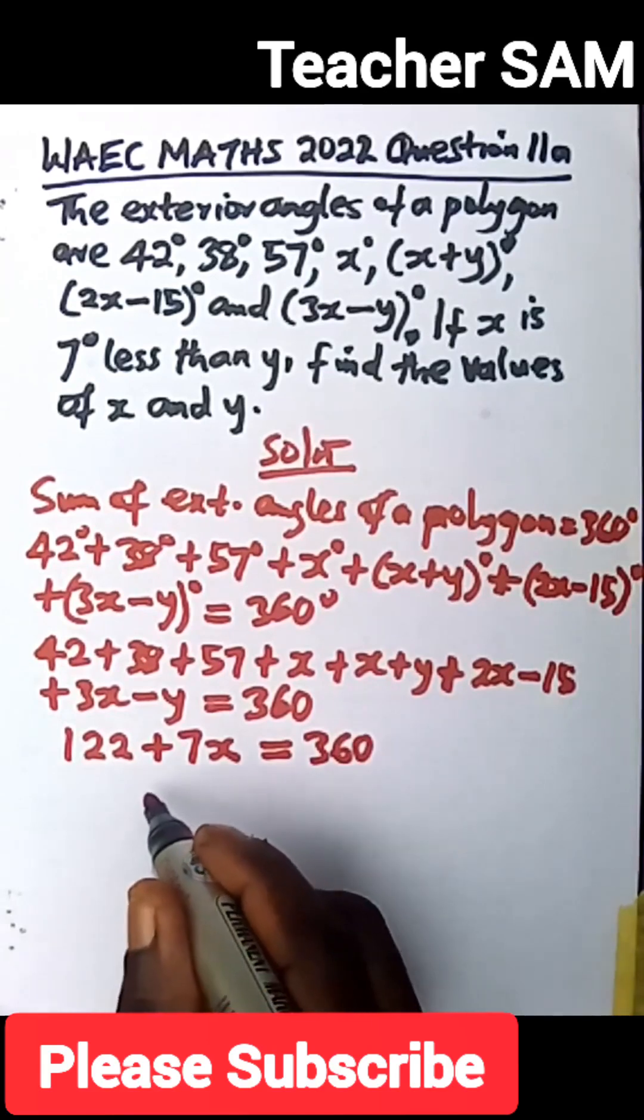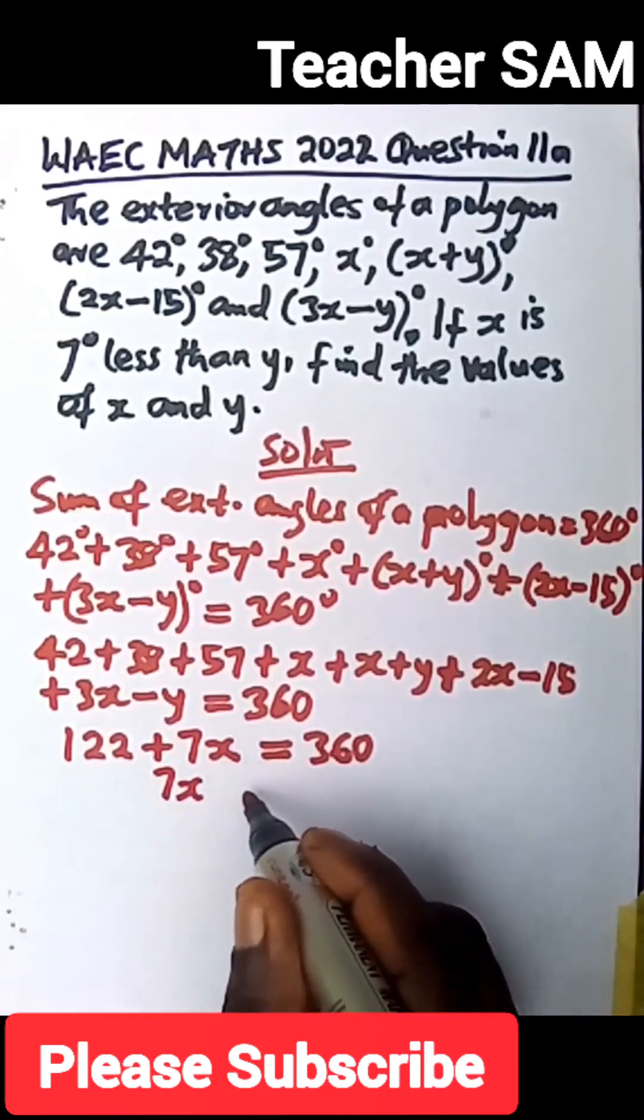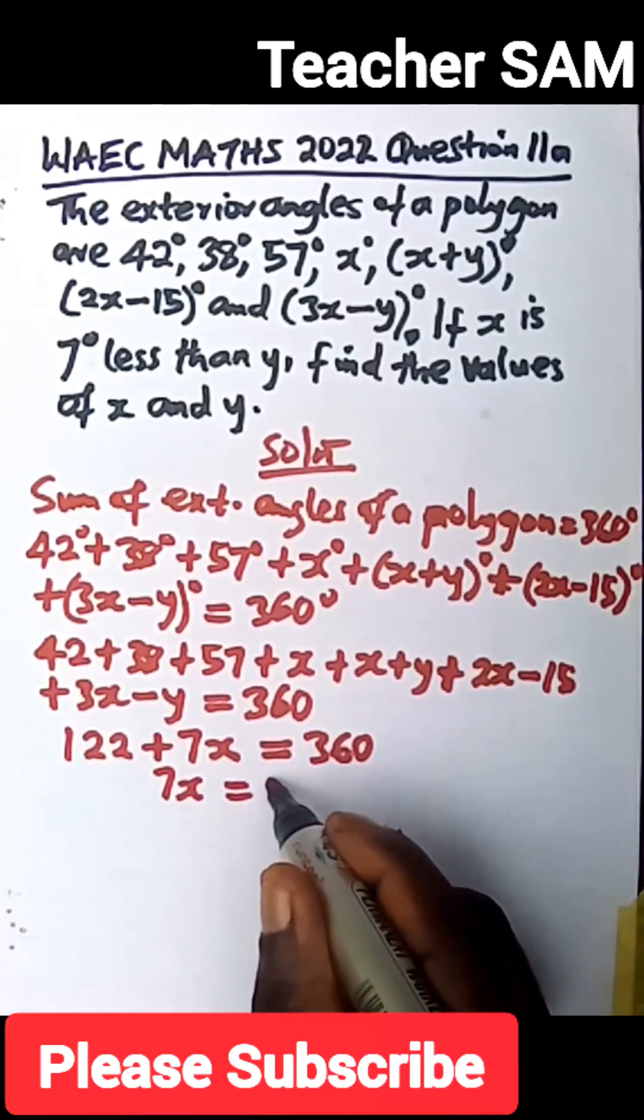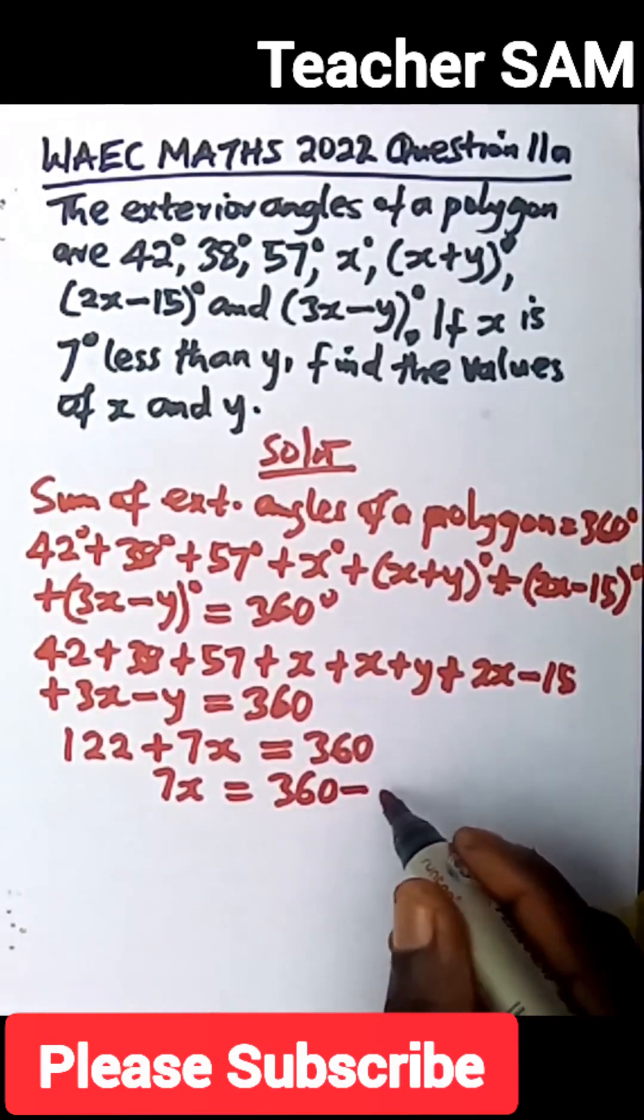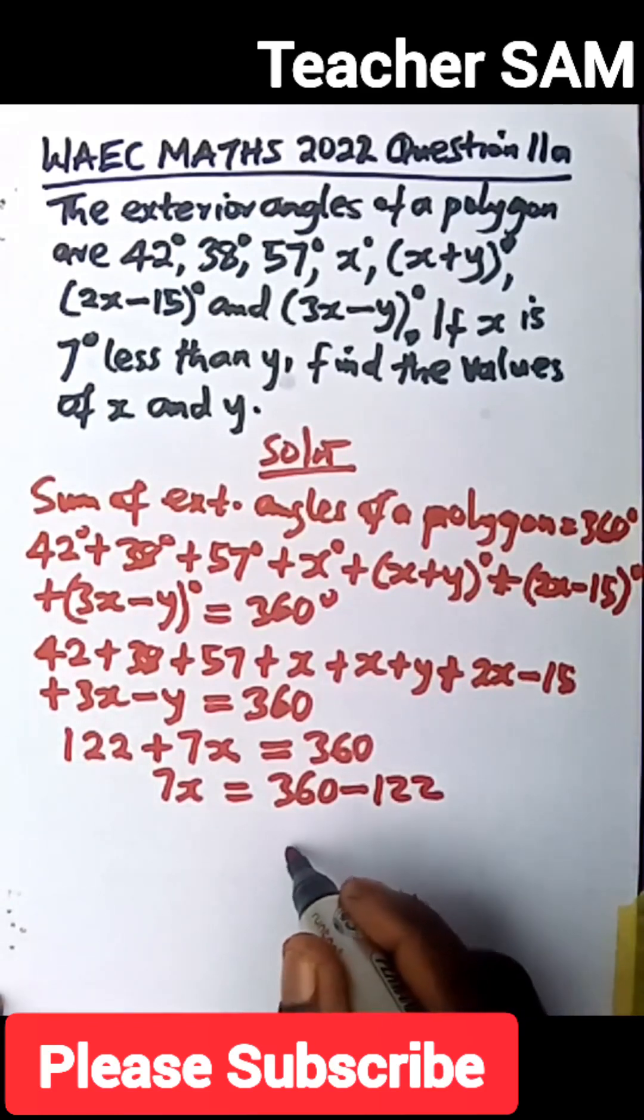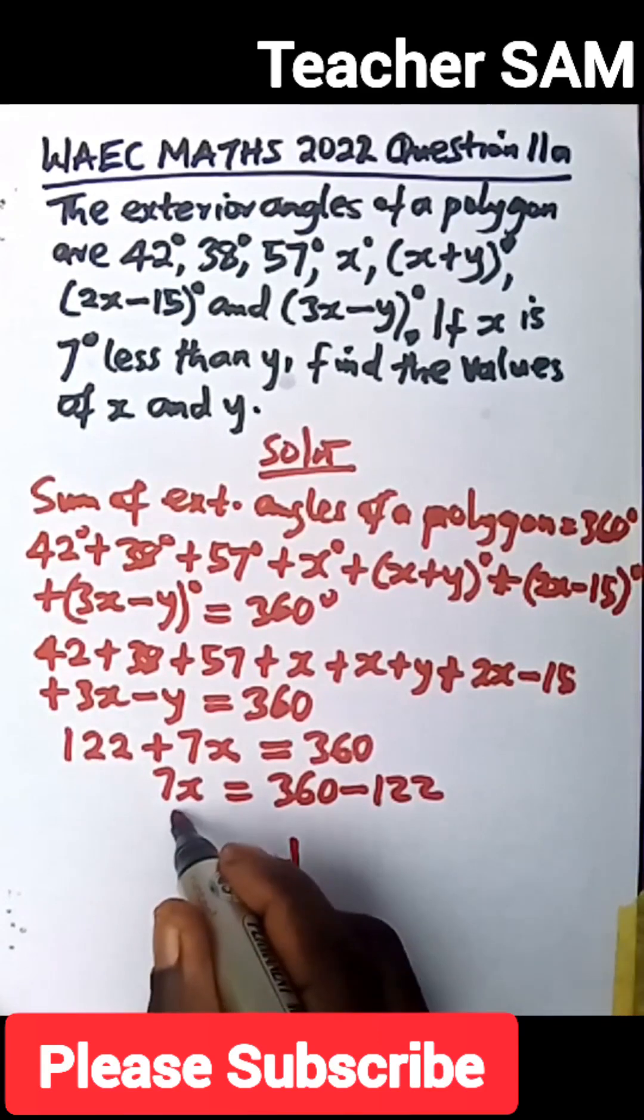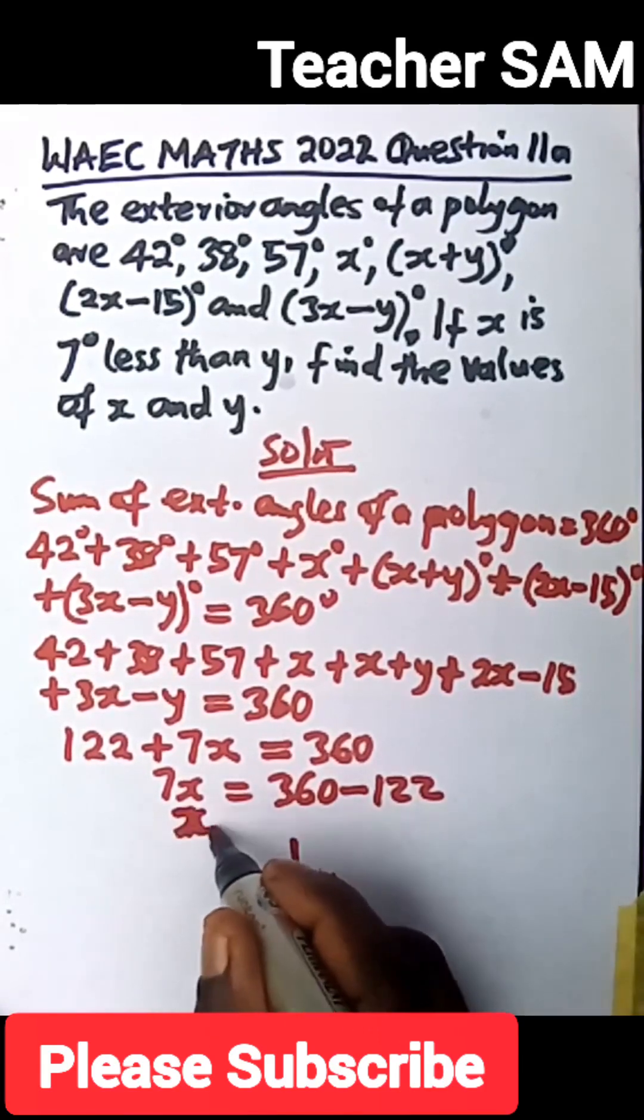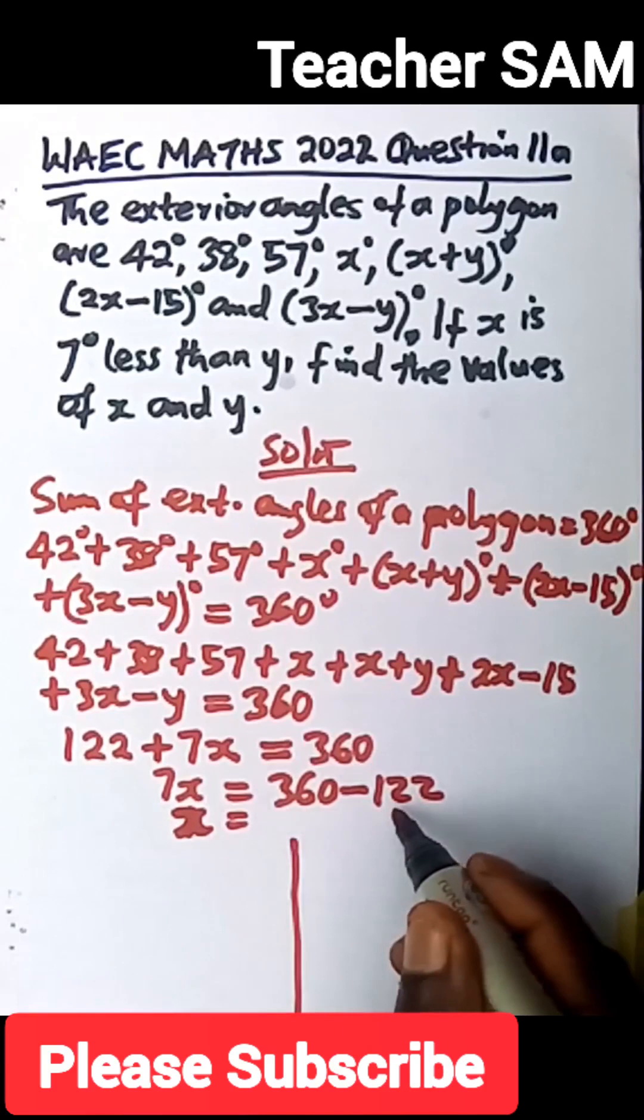Now we go on, we move this number to this side, collecting like terms. So we have 7x to be equal to 360 minus 122. Let me divide this into 2 because I will need to use this down so that my x will be equal to whatever I have here.